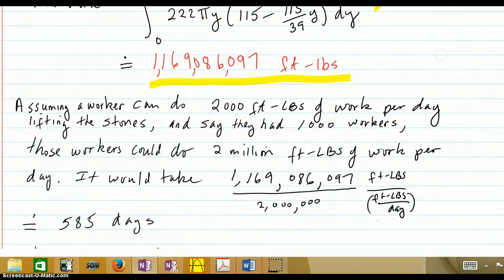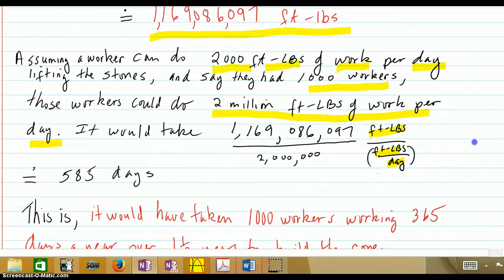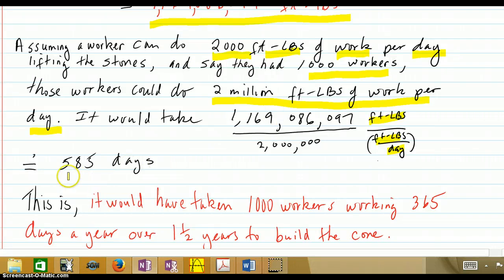Now let's just go a little further. Assuming that a worker can do about 2,000 foot-pounds, because that's what our book says it can for some other problem we're going to do. They can do that much work per day lifting the stones. And say they had 1,000 workers. Those workers could do 2,000,000 foot-pounds of work per day, multiplying those two numbers together. So if you divide that into the total foot-pounds of work required to do it, and notice that's foot-pounds required over the 2,000,000 was foot-pounds of work per day. So that all divides to days, and the foot-pounds cancel out, and a day ends up in the numerator.